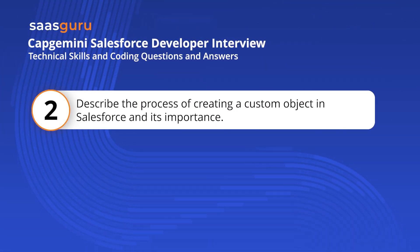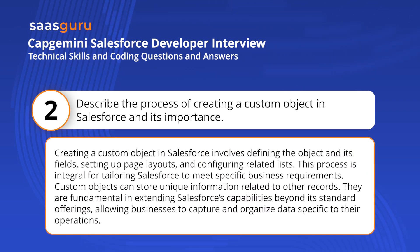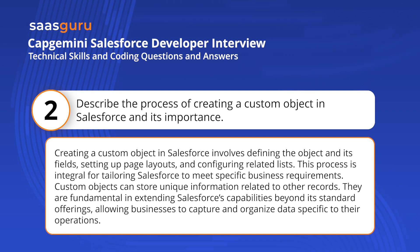Describe the process of creating a custom object in Salesforce and its importance. Creating a custom object in Salesforce involves defining the object and its fields, setting up page layouts, and configuring related lists. This process is integral for tailoring Salesforce to meet specific business requirements. Custom objects can store unique information related to other records, and are fundamental in extending Salesforce's capabilities beyond its standard offerings, allowing businesses to capture and organize data specific to their operations.